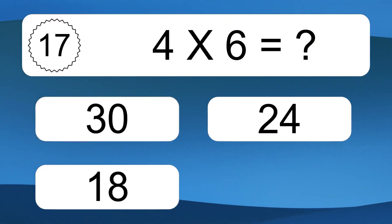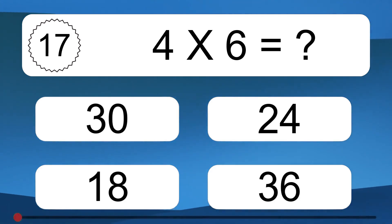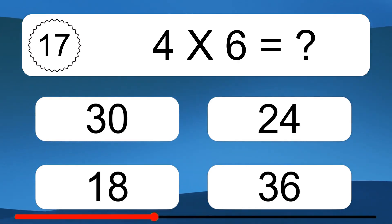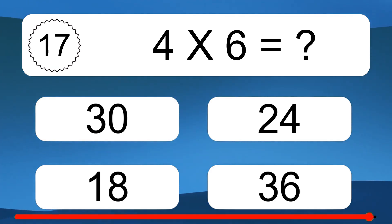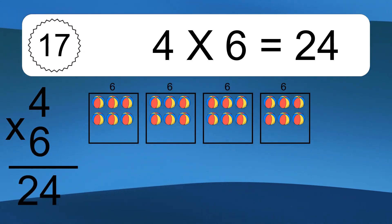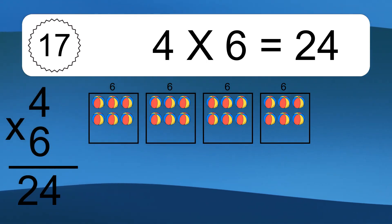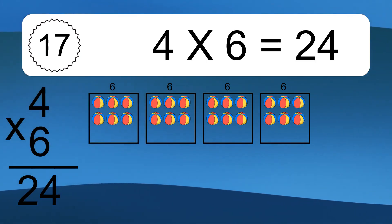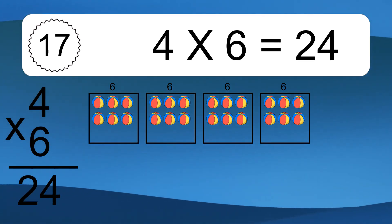4 times 6 equals what? 4 times 6 equals 24. We have 4 boxes, and each box has 6 colorful balls inside. If you count all the balls in all the boxes together, you will have 4 times 6 balls. This equals 24 balls.